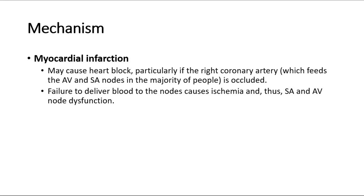Let's look at the mechanism for each cause. For myocardial infarction, it may cause heart block, particularly if the right coronary artery, which feeds the AV and SA nodes in the majority of people, is occluded. Failure to deliver blood to the nodes causes ischemia, and thus SA and AV node dysfunction.